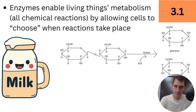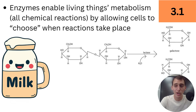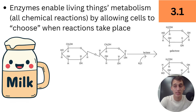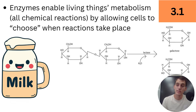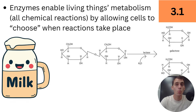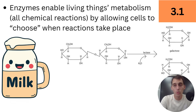Enzymes enable living things' metabolism. Metabolism — a word you've probably heard before — refers to all the chemical reactions that happen within a living thing. It typically involves taking in food, breaking it down, and reassembling those pieces into compounds that cells will use. Enzymes make sure all those reactions can happen when and where we want them to, allowing cells to choose when reactions take place.